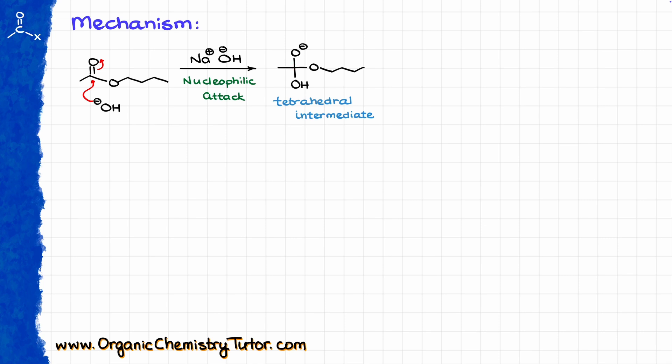Now, the next step here is going to be the leaving group dissociation, which is going to be an assisted ionization, where essentially our negatively charged oxygen going to kick our butoxide out of the molecule, giving us the carboxylic acid, the molecule on the left, and the alkoxide anion, the molecule on the right.